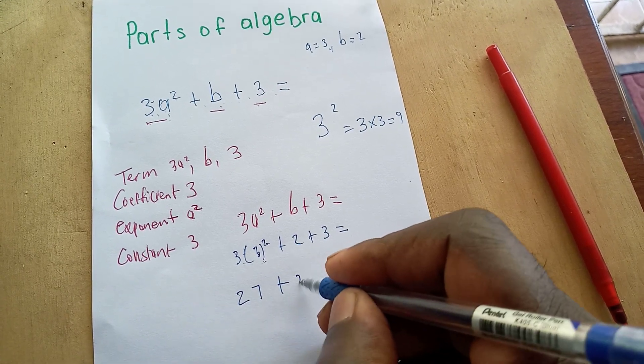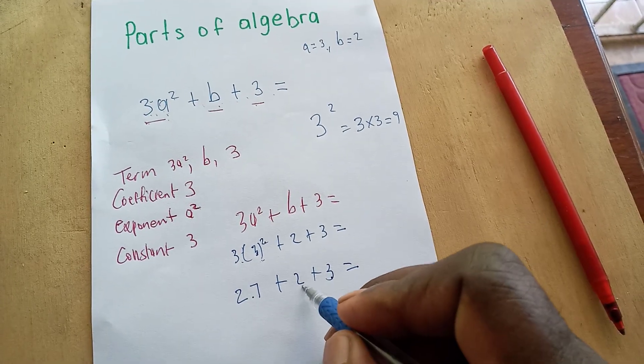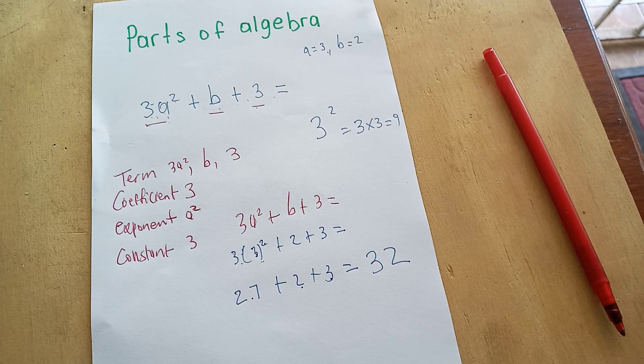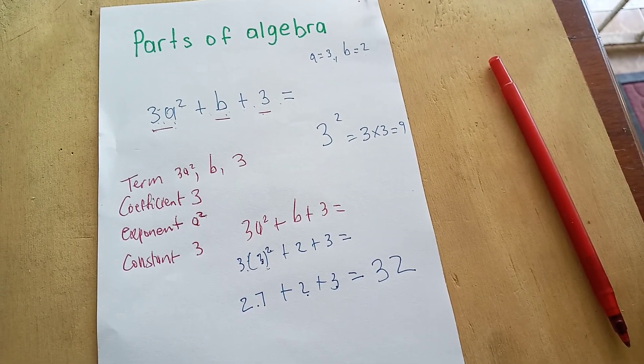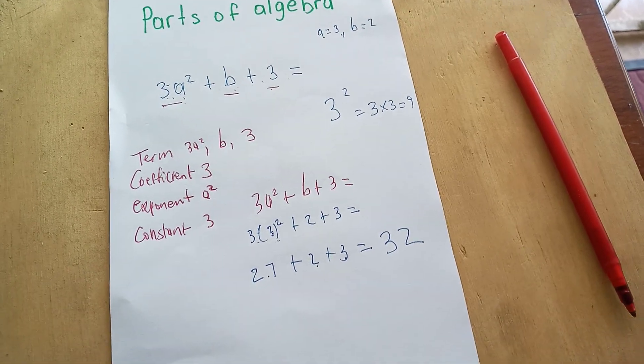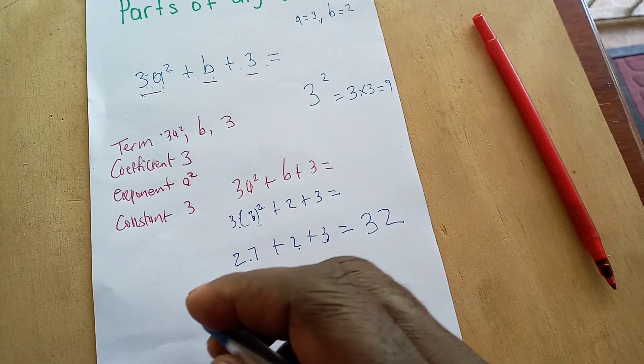So 27 plus 2 plus 3 equals. Well, 27 and 3 is going to equal 30, plus 2 gives us 32, and that will be the answer for our algebraic equation. So pause the video or you can replay and learn about the parts, or you could just try this one for yourself.